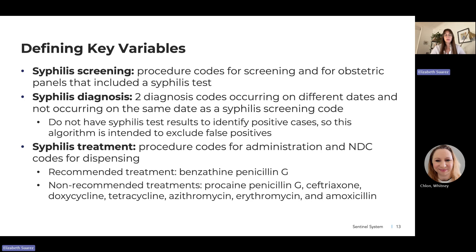For syphilis treatment, we identified cases based on procedure codes for administration of the antibiotic or national drug codes for a dispensed antibiotic. The recommended treatment is benzathine penicillin G, but we also identified non-recommended alternative treatments — a list of antibiotics sometimes used for syphilis outside of pregnancy but not recommended during pregnancy.